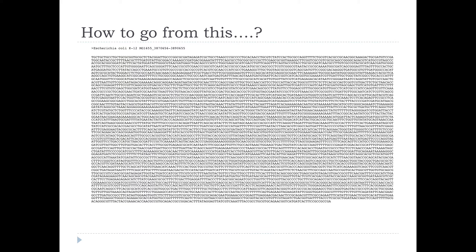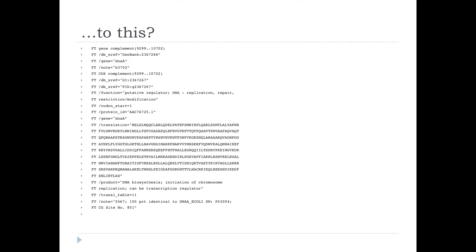In one sense, annotation is going from something like a raw sequence — just those A's, C's, T's and G's — to marking it up with features, usually in GenBank format. You use a constrained vocabulary to mark up the features in a very predictable way so that anyone else can see what you're doing and can compare one genome with another, because it's been marked up using the same kind of system.